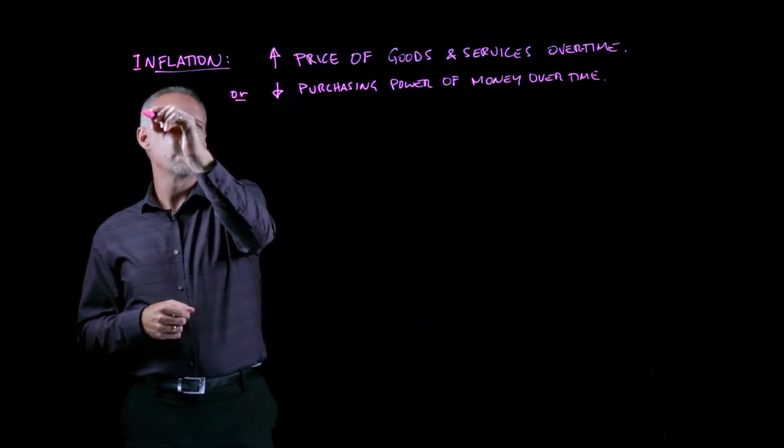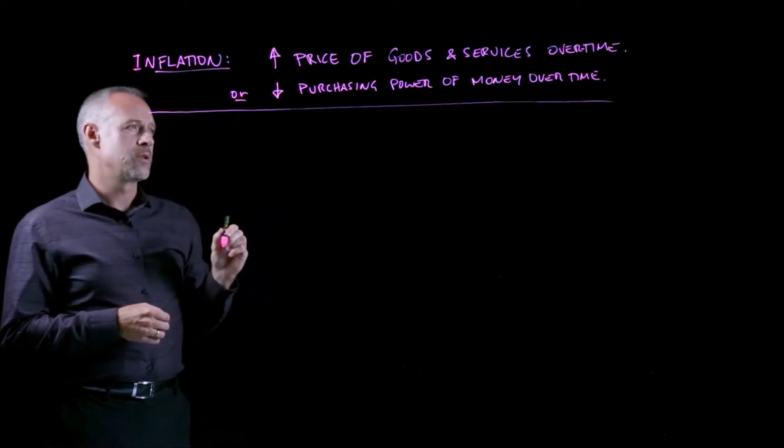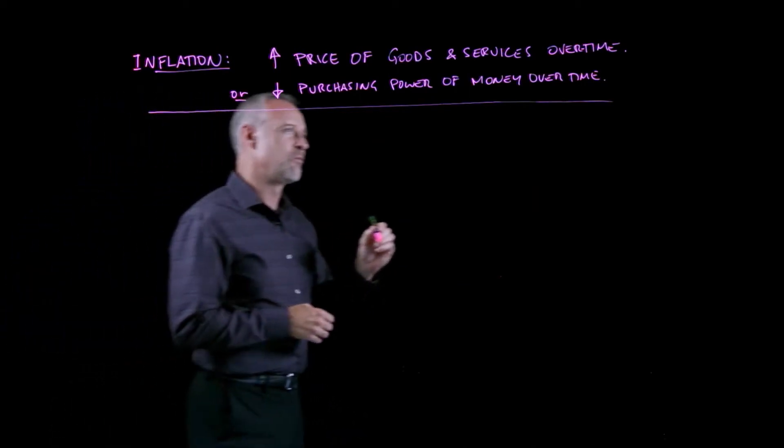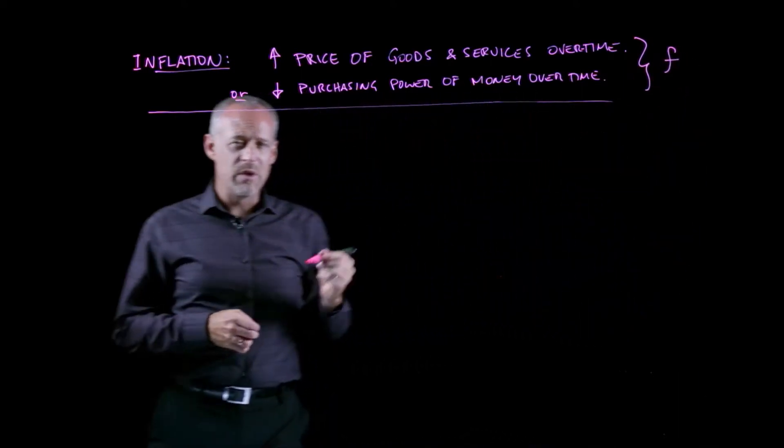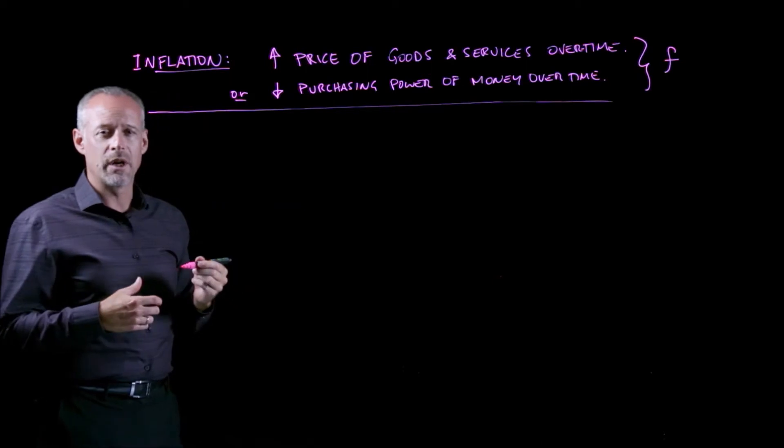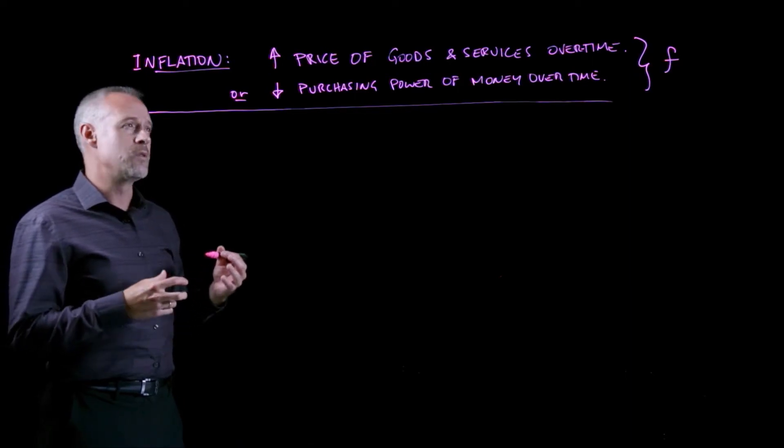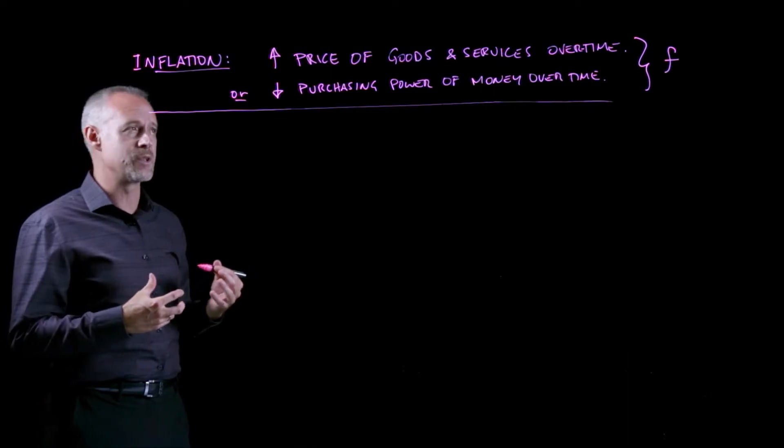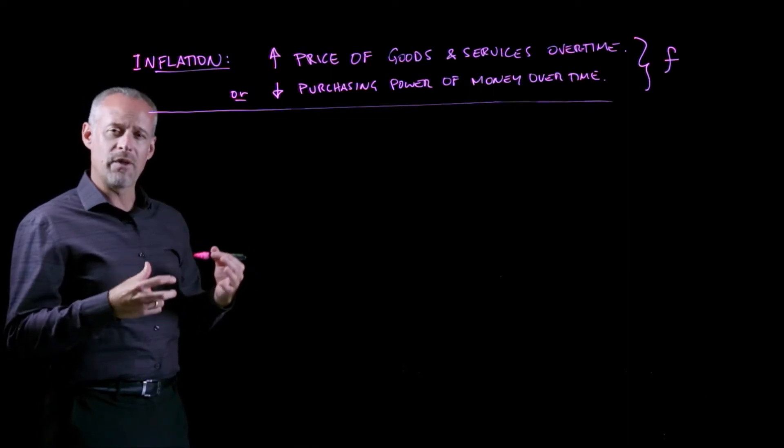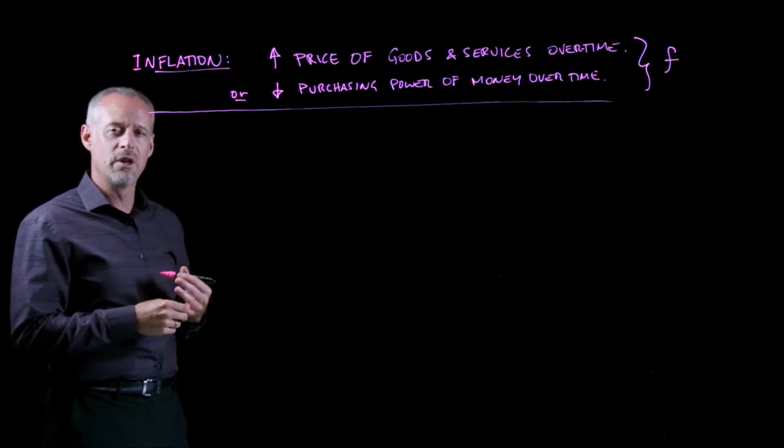Most governments will actually measure this inflation. We refer to inflation by the letter F, and this can be measured using things called price indexes. In Canada, you may have heard of something called the consumer price index, and that is Statistics Canada measuring the price of what they call a standard basket of goods and services and how the prices of the goods contained in that basket change year to year.